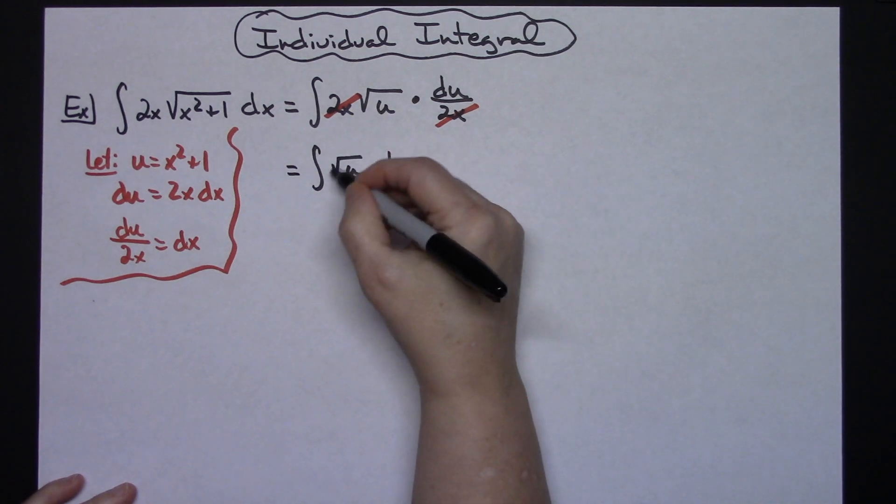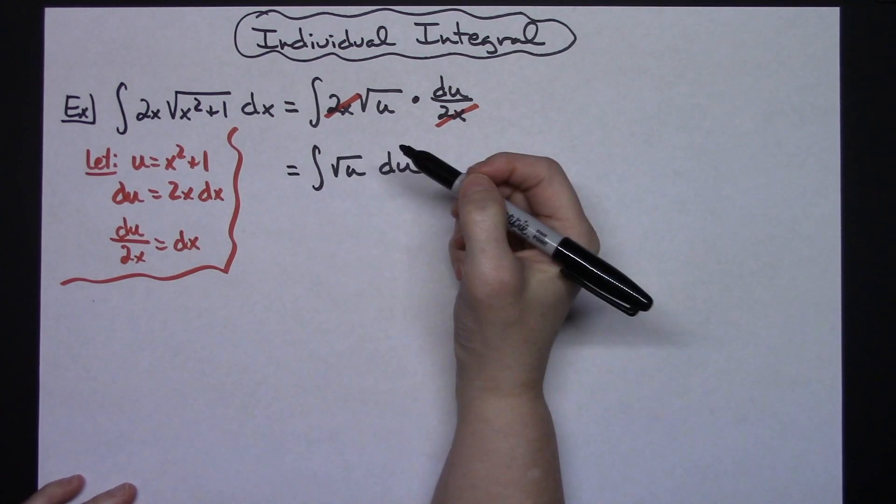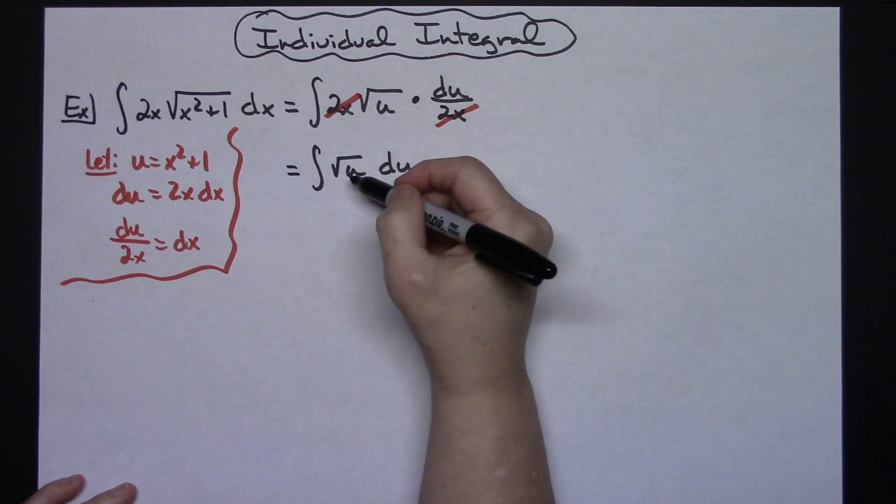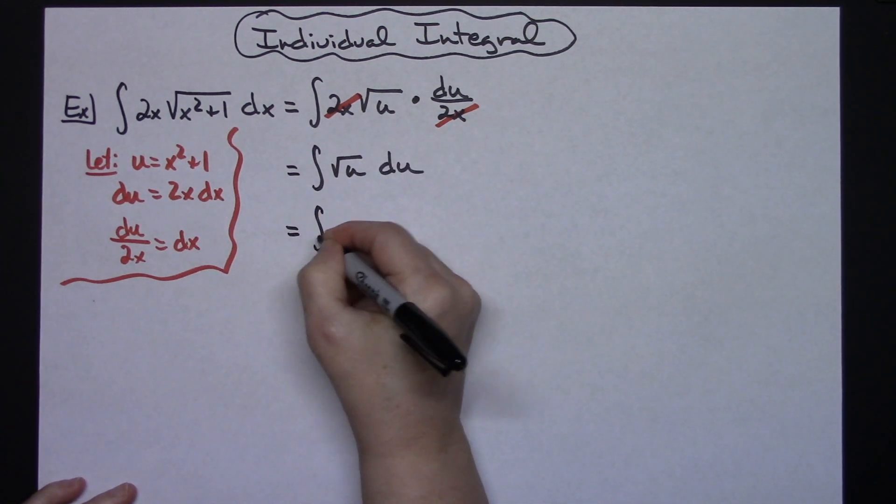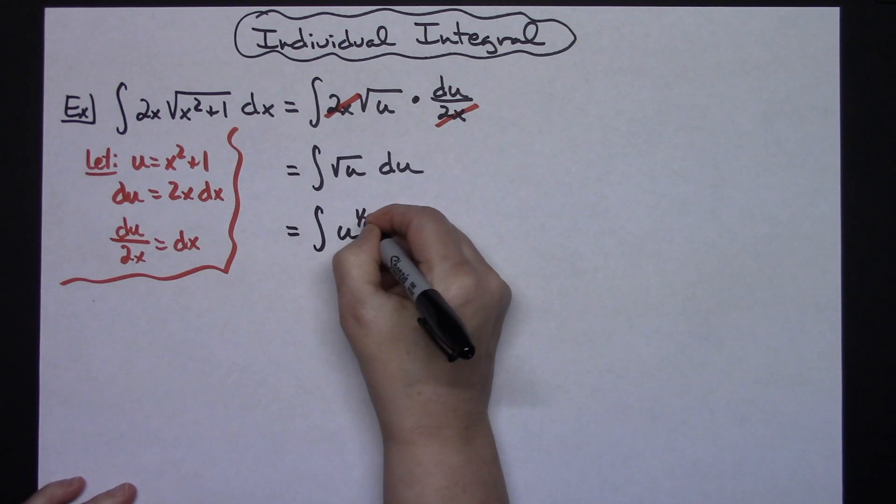Now to be able to integrate this I'm going to have to go from radical form to exponential form. So I'm just going to rewrite that as u to the 1 half. So I'm going to have the integral of u to the 1 half du.